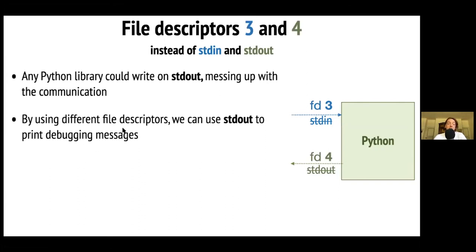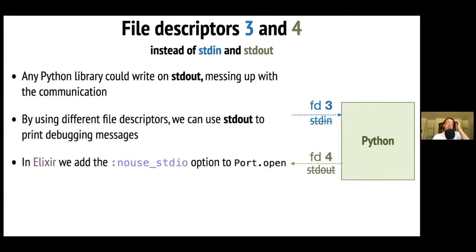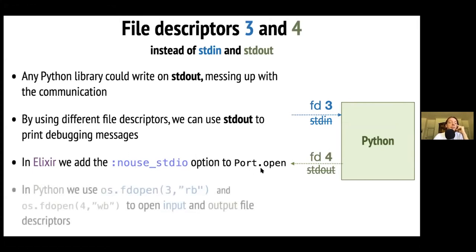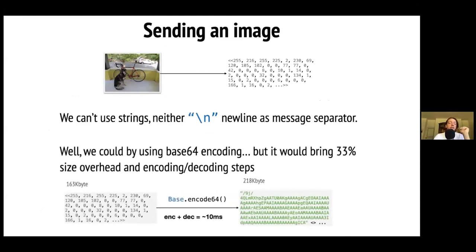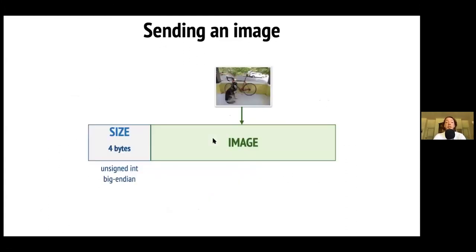Since we're sending images, we can't use newline as a separator. Instead of base64 encoding — which brings 33% size overhead — we use a 4-byte header containing the size of the payload. With ports, we just add the option `packet: 4` and the port will automatically prepend a 4-byte header with the payload size for every message sent, and will also expect that header on messages received from Python. We also send a 16-byte unique image ID along with the image to distinguish different requests.